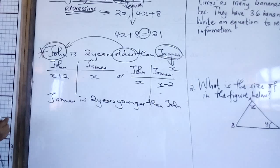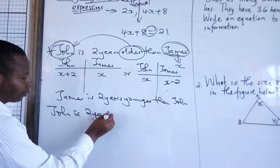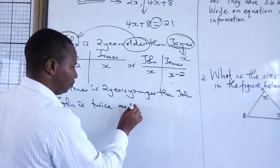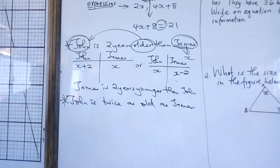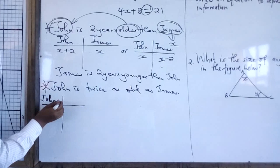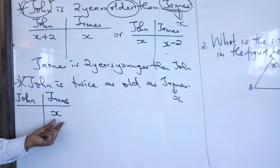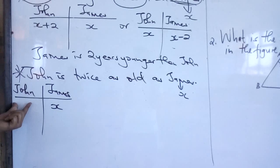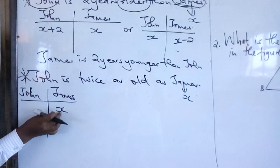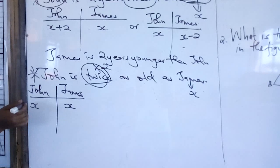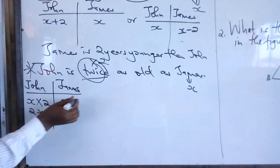Another example: John is twice as old as James. Identify the personalities — we have John and James. The last person is James, so let x represent the age of James. To find John's age, we start with the age of James. John is twice as old, so 'twice' means times two — the age of John is x times 2, which is 2x.